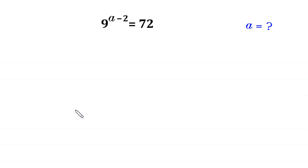Hello, welcome to how to solve this very nice exponential equation. 9 to the power a minus 2 is equal to 72. We need to find the value of a.